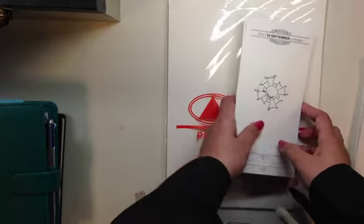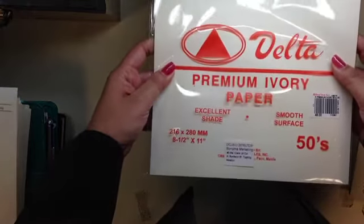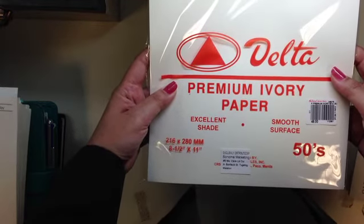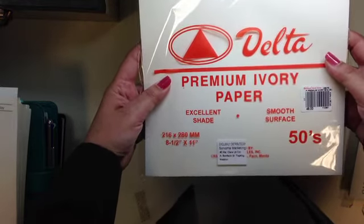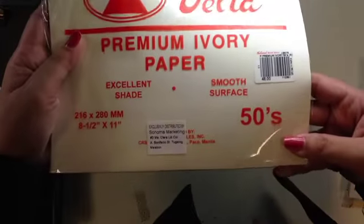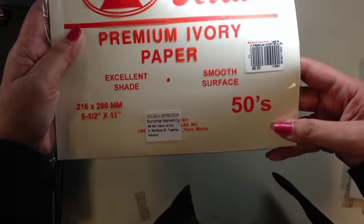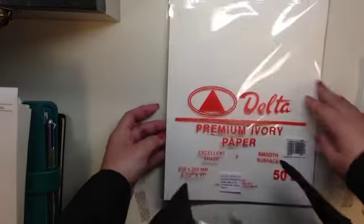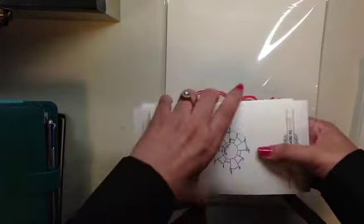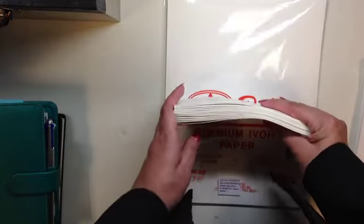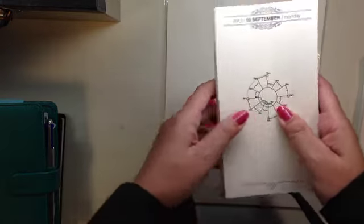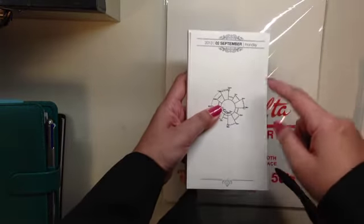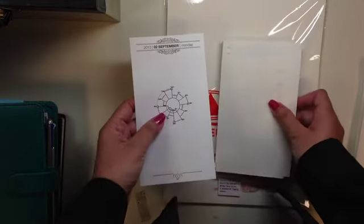And I used the same paper, it's the Delta premium ivory paper, it's actually very good for fountain pens as well. I tried it with all of my nibs and they did not bleed through so that's a good thing. I purchased this at National Bookstore, it cost about 48 pesos or a little more than a dollar for 50 sheets, and then I cut this in half and printed the file from InDesign with crop marks and then I asked my printer guy to cut this down using the crop marks as a guide.